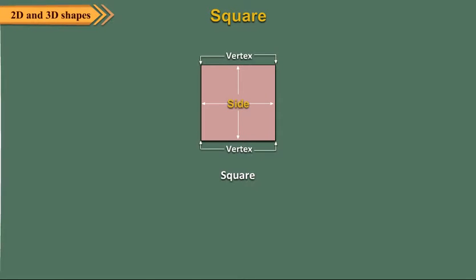Square. A square has four sides. All the sides of a square are equal. A square has four vertices.